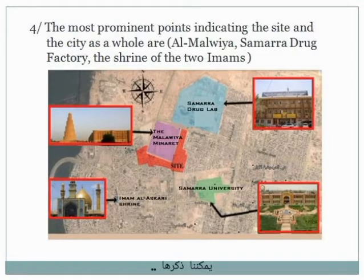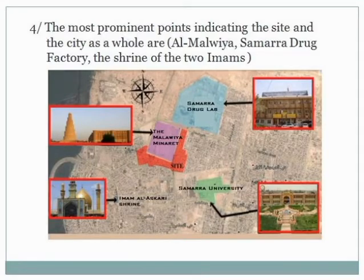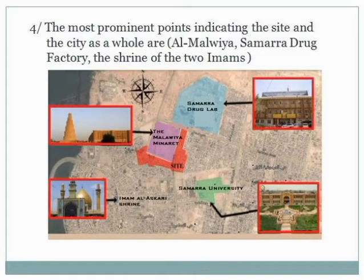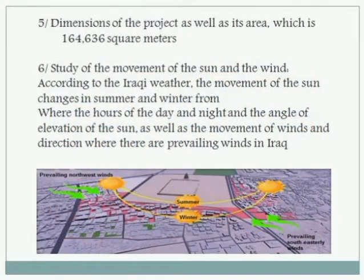We can mention the prominent points around the site — as we said, Samara University and the Samara Medicine Factory. The dimension of the project is nearly 164,000 square metres.